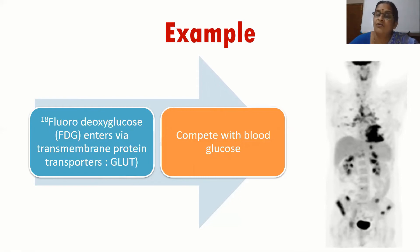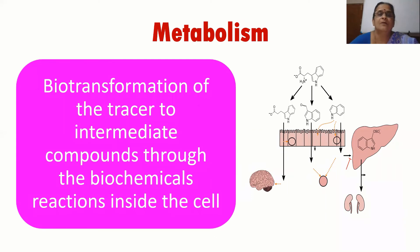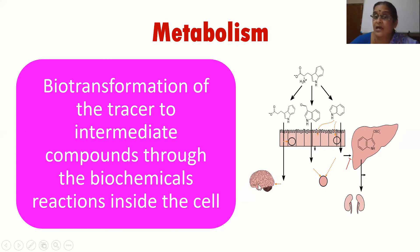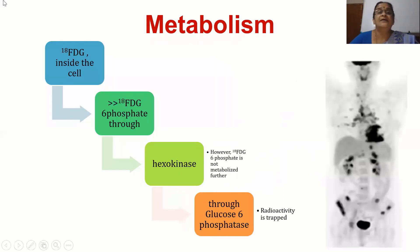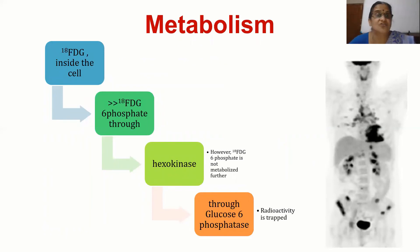The patient needs to keep glucose levels low for this reason. Now, metabolism: the biotransformation of the tracer to intermediate compounds through biochemical reactions inside the cell. There can be different biochemical reactions in hypermetabolic areas like the liver. FDG again serves as the example — using a second mechanism after entering via facilitated diffusion. It gets trapped inside the cell because it is considered as glucose by the hexokinase enzyme.